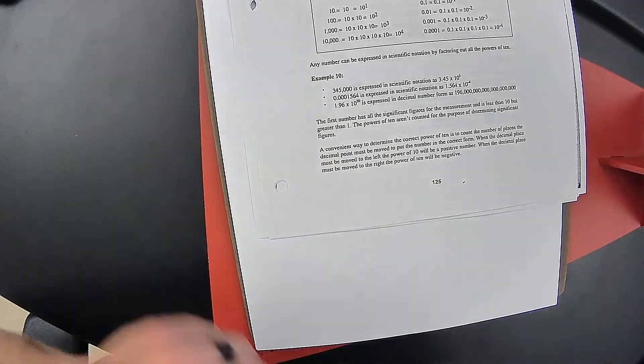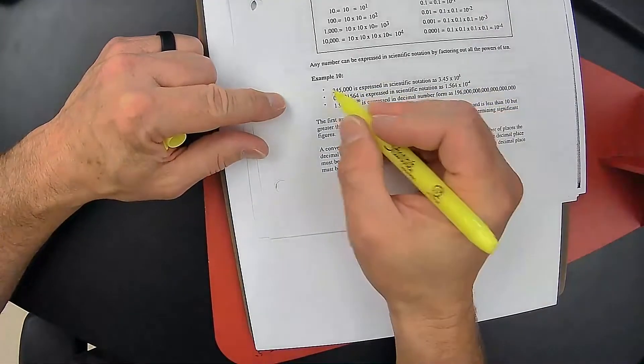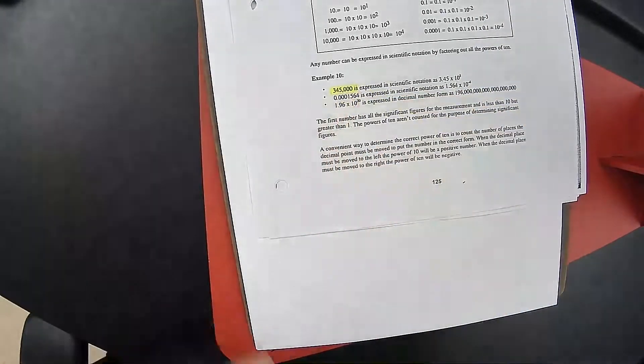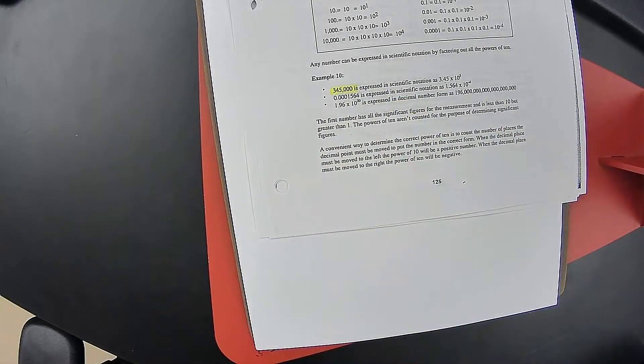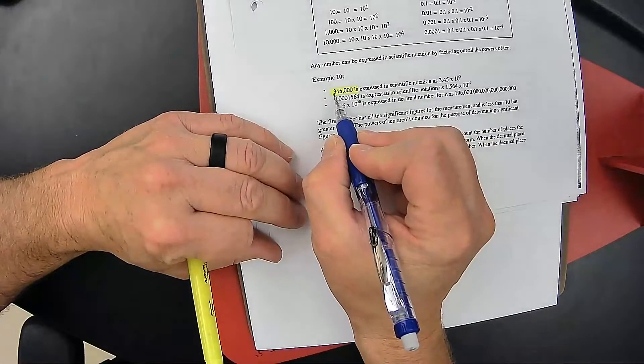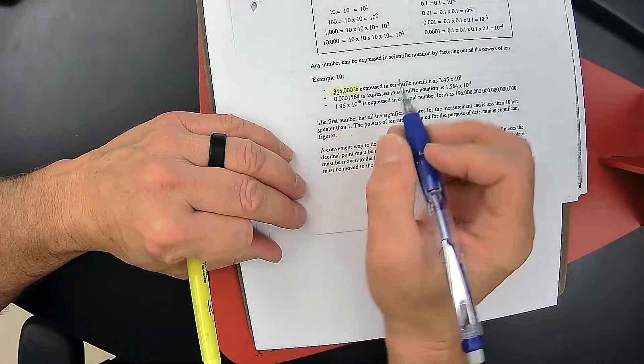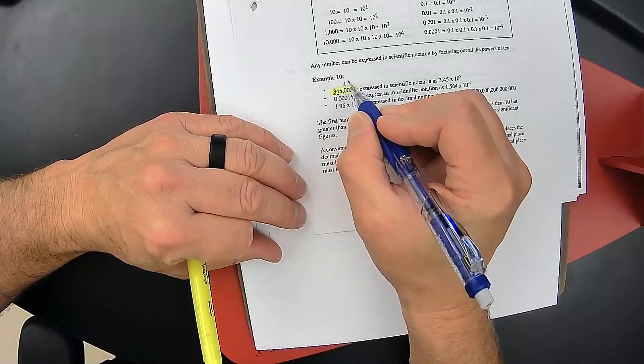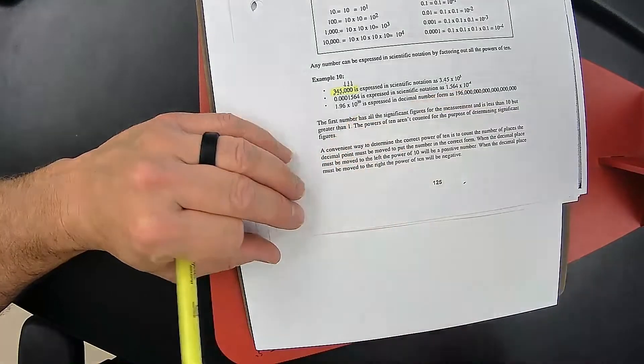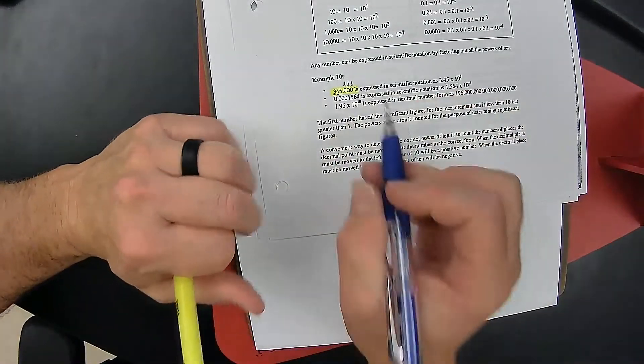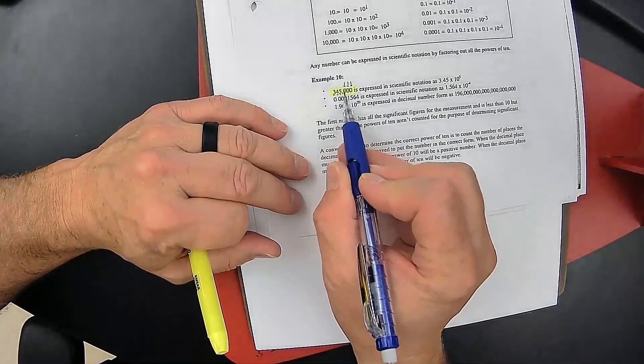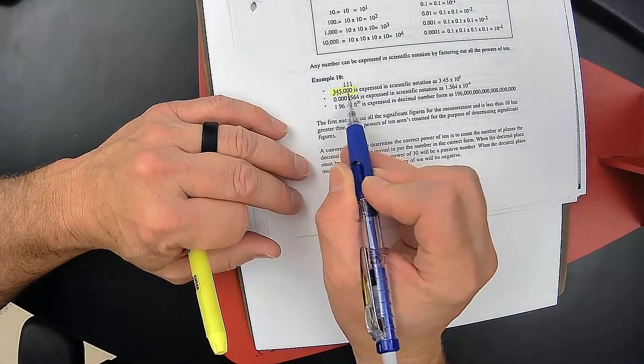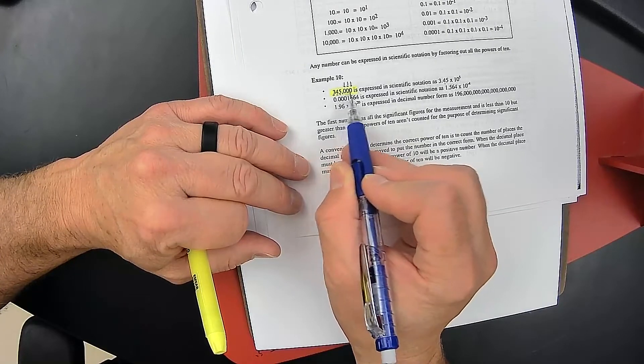The first one is 345,000. Now what I want to point out to you is the three is a significant digit, the four and the five, but all of these zeros are not significant because they are trailing zeros but they're not to the right of a decimal so they're not significant.